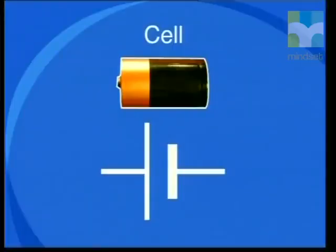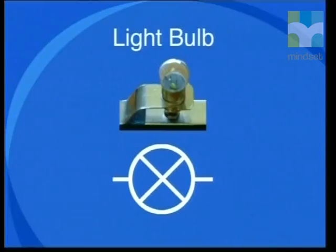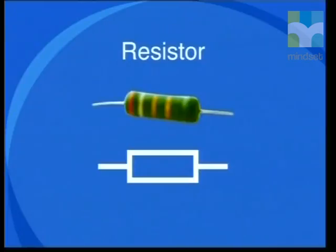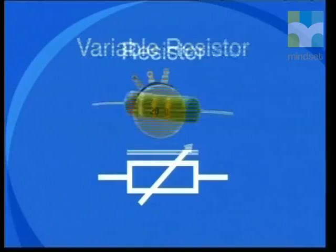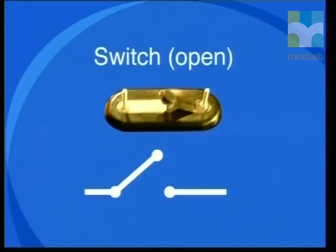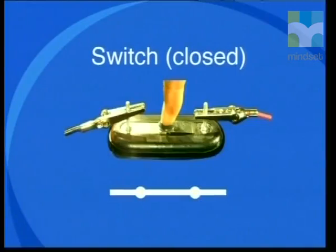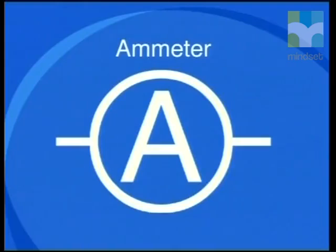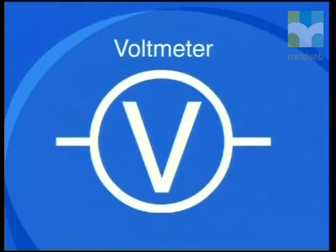These symbols are for the cell, a light bulb, a resistor, a variable resistor, an open switch, a closed switch, an ammeter, and a voltmeter.